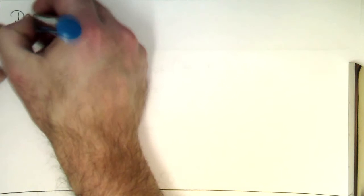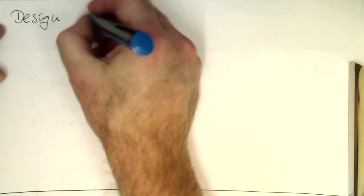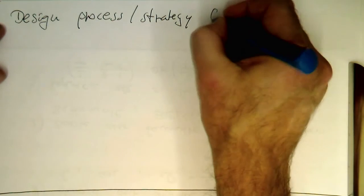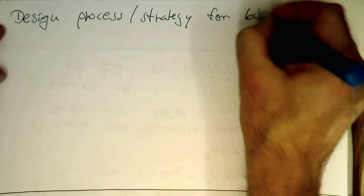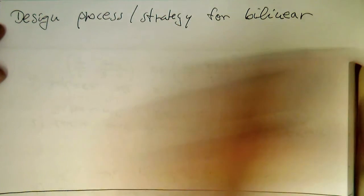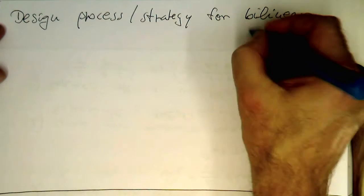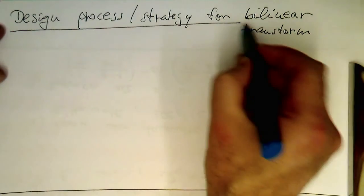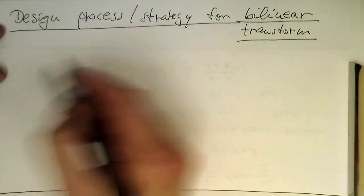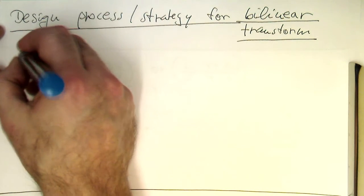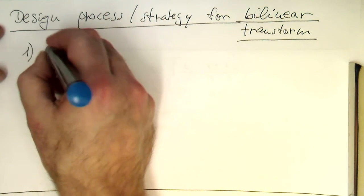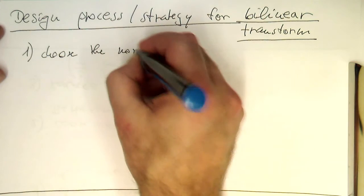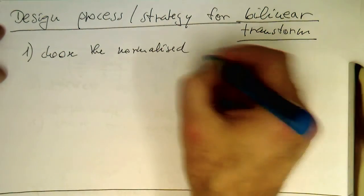So design process or strategy for the bilinear transform. The steps are quite easy. Step one is choose the normalized cutoff frequency.